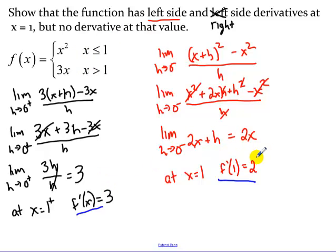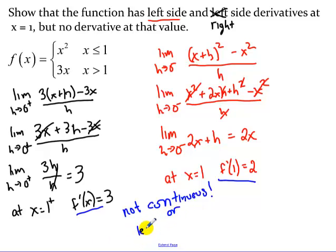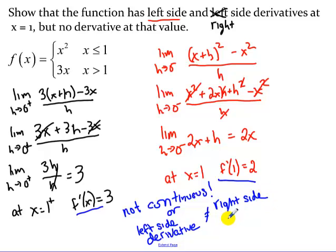We found derivative values from both sides: 3 from the right, 2 from the left — but there is no derivative at x equals 1 because those values are not equal. For the derivative to exist at a point, the left and right values must match. Also notice the function is not continuous at x equals 1 either. So there are two separate reasons: the function is not continuous, and the left-sided derivative does not equal the right-sided derivative.